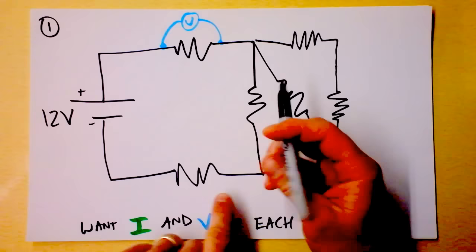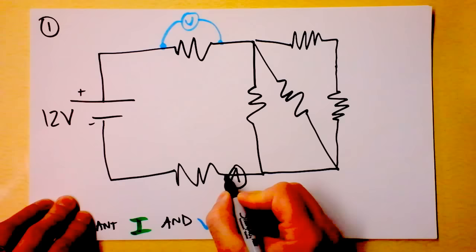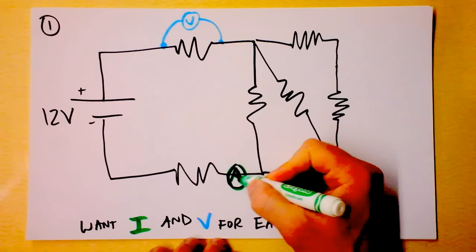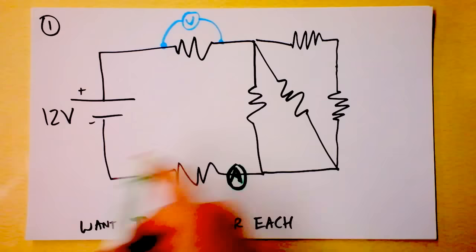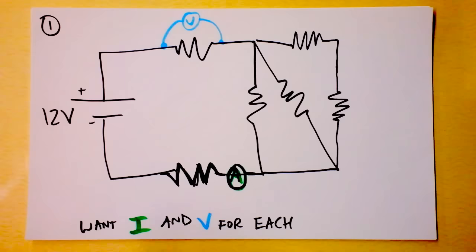An ammeter is the opposite sort of thing. An ammeter would be in line with the resistor — the current goes through the ammeter. Now ideally the ammeter has no resistance at all. The ammeter will log the current through this resistor and give us the current going through that resistor.